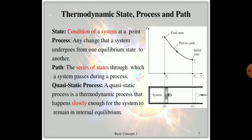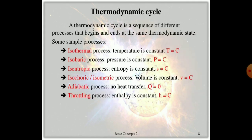A quasi-static process is a thermodynamic process that happens slowly enough for the system to remain in internal equilibrium. A thermodynamic cycle is the sequence of different processes that begins and ends at the same thermodynamic state. Examples of processes include: isothermal (temperature constant), isobaric (pressure constant, P = constant), isentropic (entropy constant, S = constant), and isochoric or isometric (volume constant).